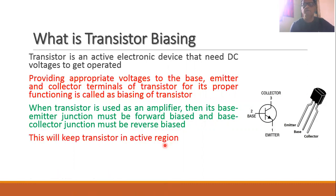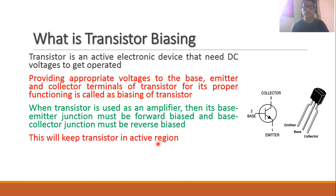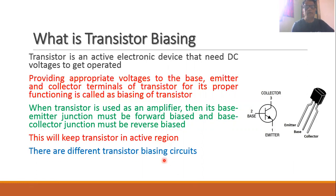When we make one junction of the transistor forward biased and another junction reverse biased, we say that the transistor is in the active region. It is essential that we should use the transistor in the active region whenever we want to use it as an amplifier. Biasing circuits are those circuits with the help of which we can provide appropriate voltages to the transistor so that the transistor can get biased.